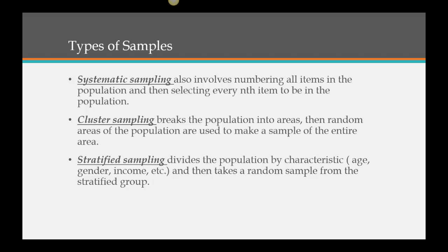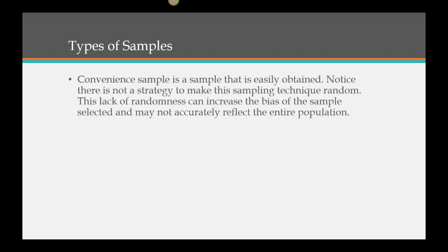Cluster sampling breaks the population into areas, then random areas are used to make a sample of the entire population. Stratified sampling divides the population by characteristic — like age, gender, income — and then takes a random sample from each stratified group. Convenient sampling is a sample that is easily obtained; there is no strategy to make it random, which can increase bias and may not accurately reflect the entire population.